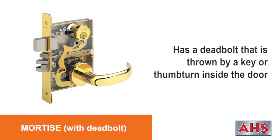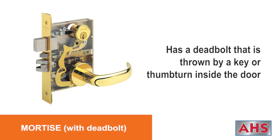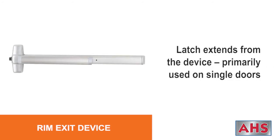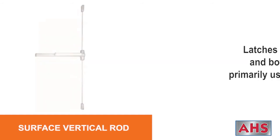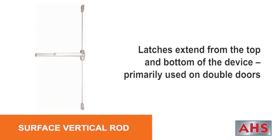A mortise lock with deadbolt has a deadbolt that is thrown by a key or thumb turn inside the door. With a rim exit device, the latch extends from the device; rim exit devices are primarily used on single doors. With a surface vertical rod exit device, latches extend from the top and bottom of the device; SVR exit devices are used primarily on double doors.